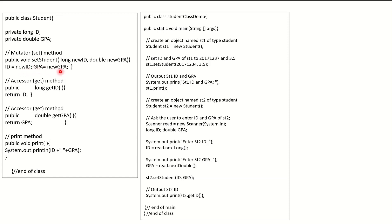Just like you have a set method, you have a get method as well. With the get method, it is public — if I need to retrieve ID I call getID, it returns long, and the code simply says return ID. If I need to return GBA, I say public double getGBA and simply return GBA. We also have a printing method: public void print means we are not returning any value — we just call System.out.println with ID and GBA to output their current values. This is the end of our class.